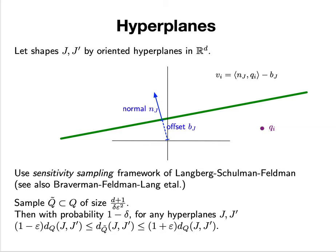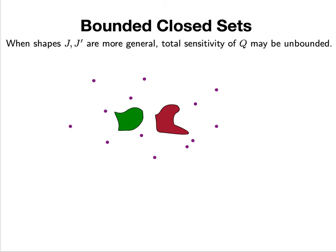With probability 1-δ for that pair of half-planes, the distance is (1+ε) approximated using just this sample. There are details about weights that are now standard. In this setting with half-spaces, it fits well in the sensitivity sampling framework.